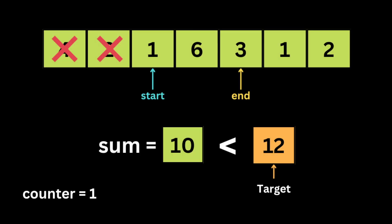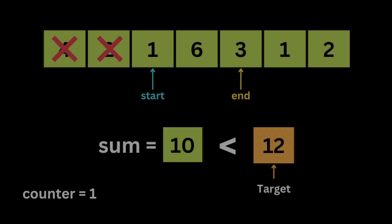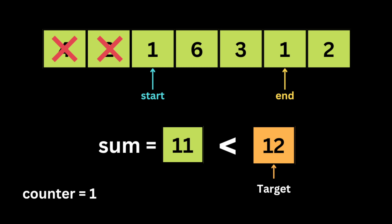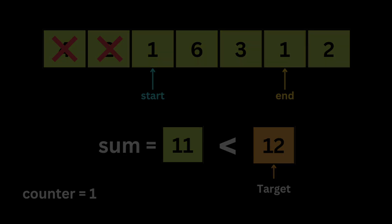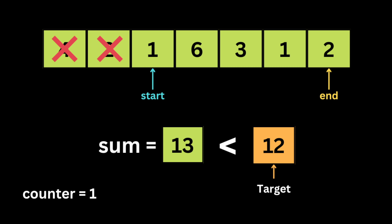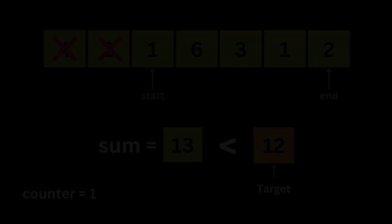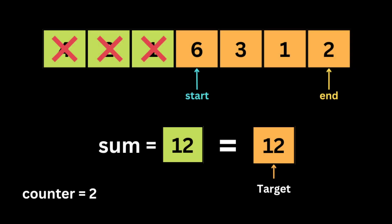We increase the counter by one, then shrink the window by moving start to the next integer. The window total is now 10, so we expand by moving end by one — sum becomes 11 — still less, so we move end again. The sum is 13, greater than the target, so we subtract the value at start and move start by one; the sum becomes 12, equal to the target, so we found another matching subarray.